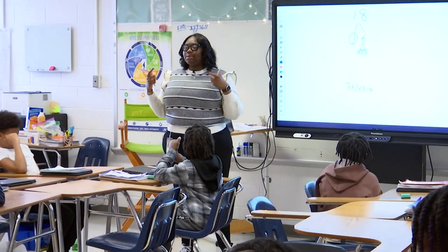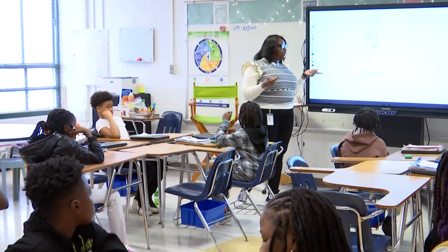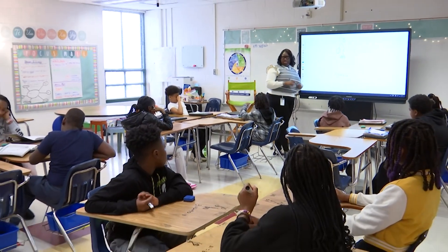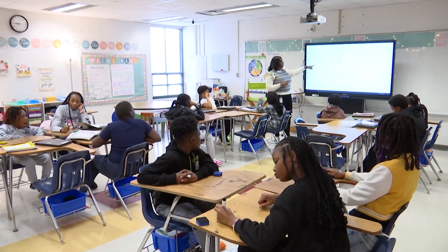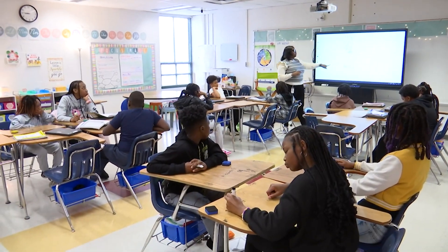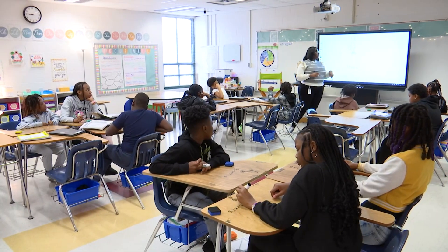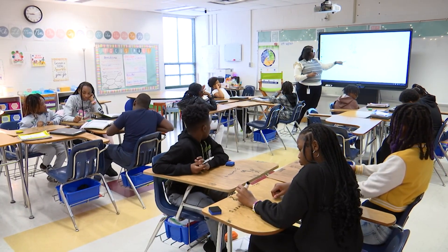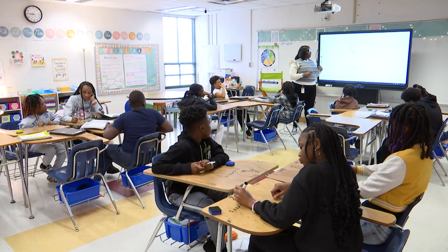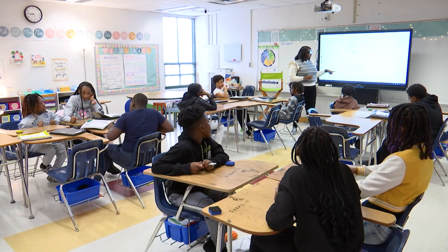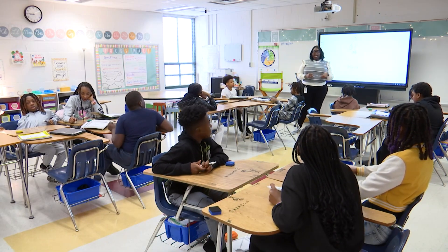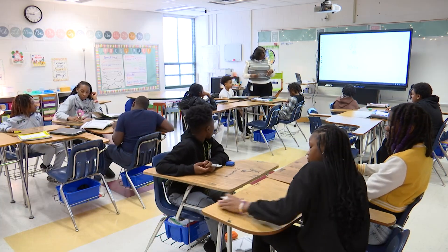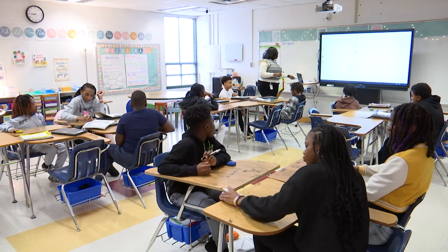So if you have your test and you see this factor tree and it asks what is the prime factorization, you start with the first number you circled. Nice job — three times two times three. And if you multiply that out you get eighteen.